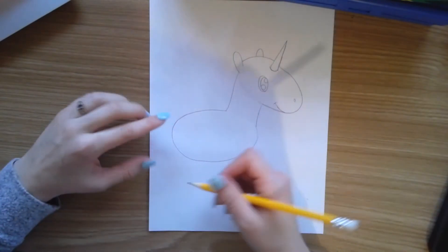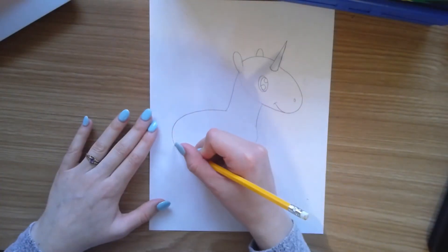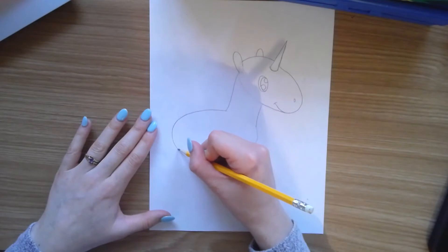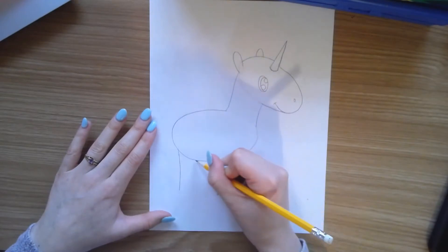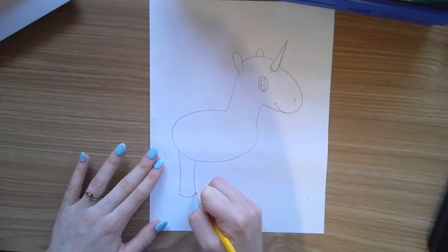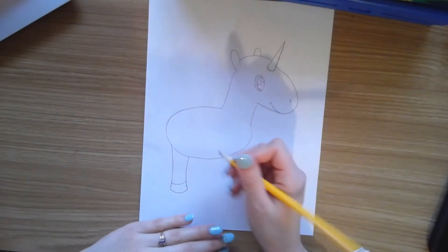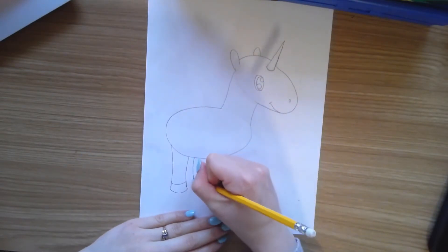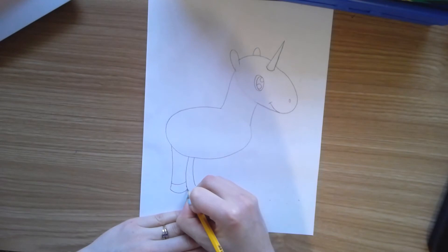Now we're going to work on the legs. Legs can be a little different. You're going to draw two straight lines down, but at the end of the leg you're going to make it curved and draw a line for the hoof. So you're going to do that again. This one's right behind it. Draw another line for the hoof.